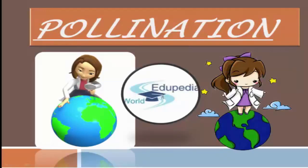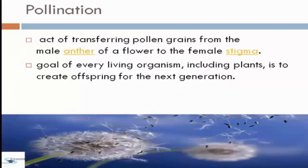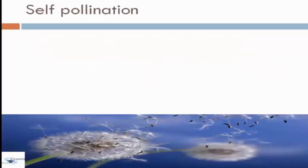For this time, let's define first what is pollination. Pollination is the act of transferring pollen grains from the male anther of a flower to the female stigma. The goal of every living organism, including plants, is to create offspring for the next generation.